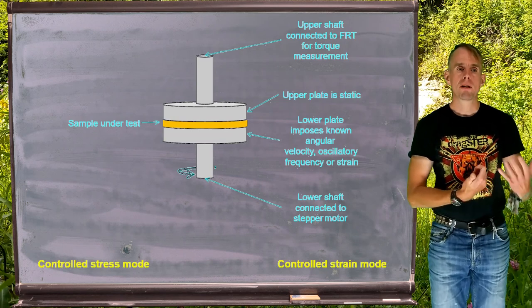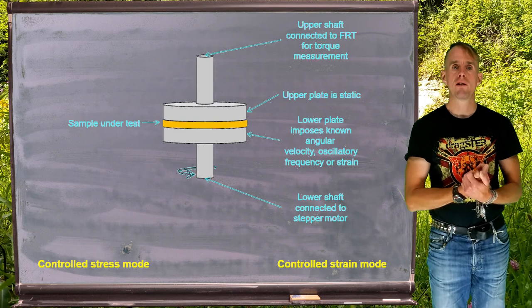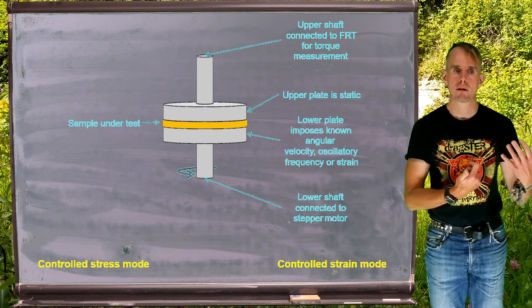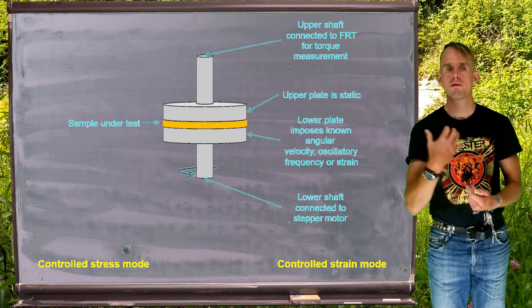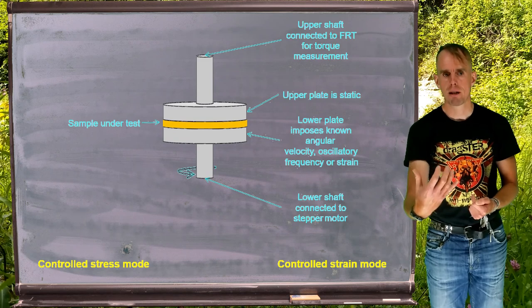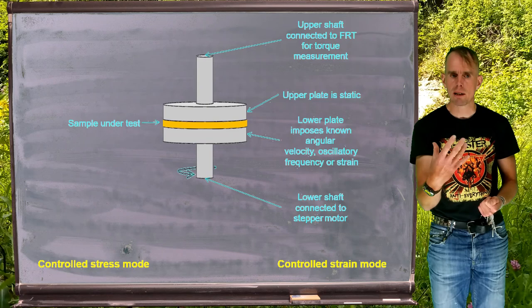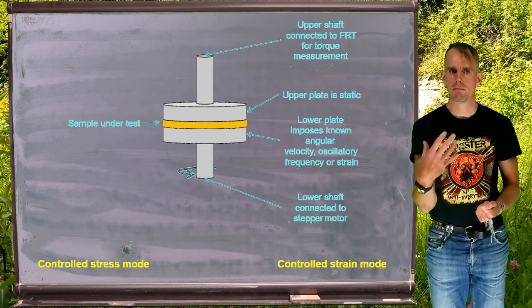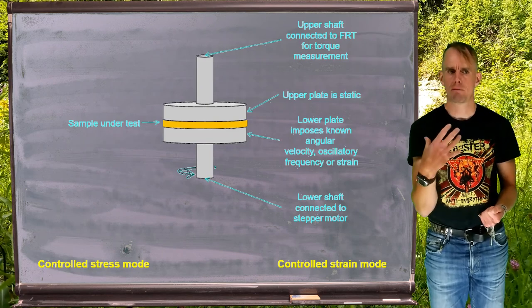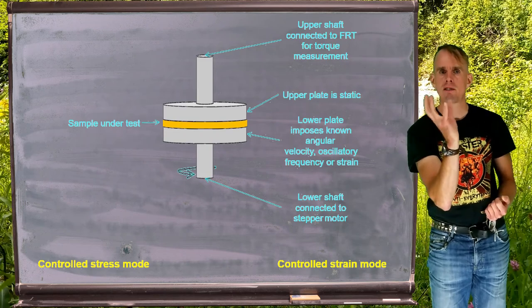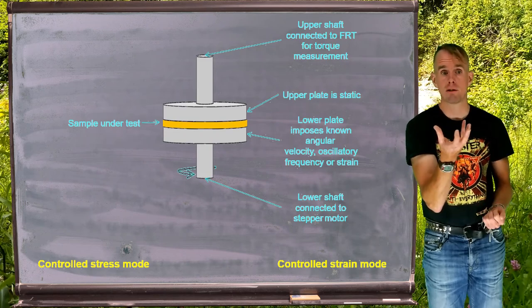So we can use rotational rheometers in two different modes, in a controlled stress mode or a controlled strain mode. If we think of the controlled strain mode first, what we're doing is setting a strain rate. We're setting gamma dot. And we do this by means of accurately setting the rotation rate, the angular velocity.